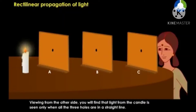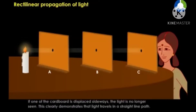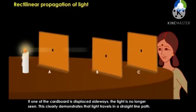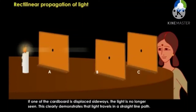Viewing from the other side, you will find that light from the candle is seen only when all the three holes are in a straight line. If one of the cardboards is displaced sideways, the light is no longer seen. This clearly demonstrates that light travels in a straight line path.